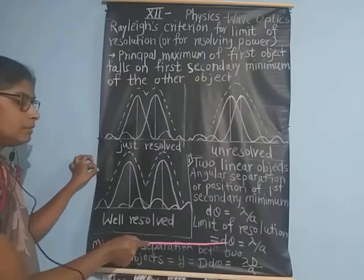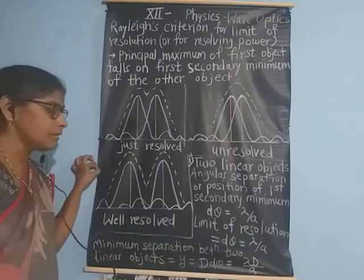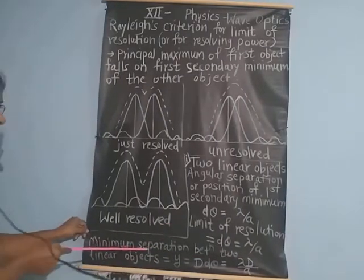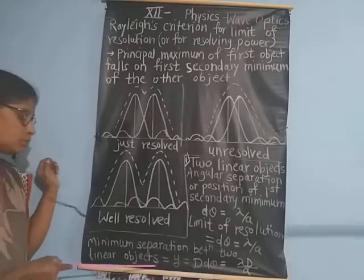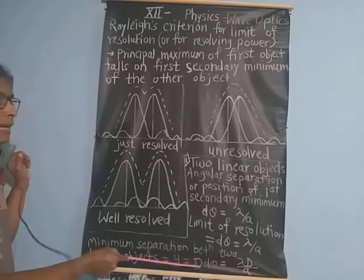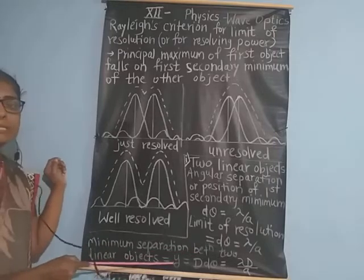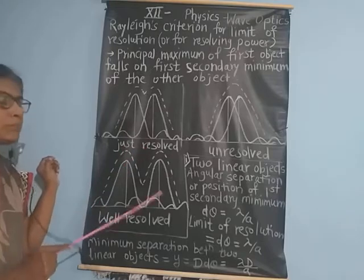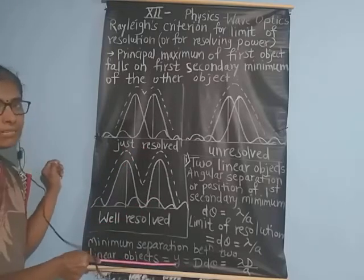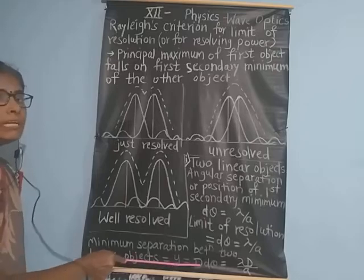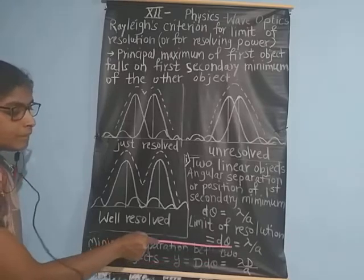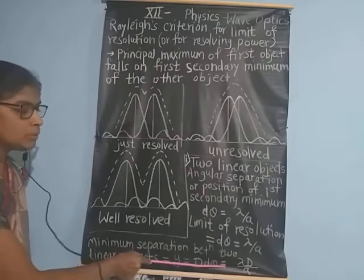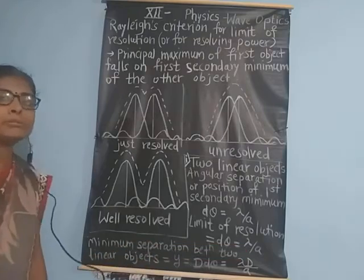This is the limit of resolution: dθ = λ/a. Here D is the distance of the optical instrument from the screen. The principal maximum to the first secondary minimum distance along the y-axis gives y = D × dθ = λD/a.